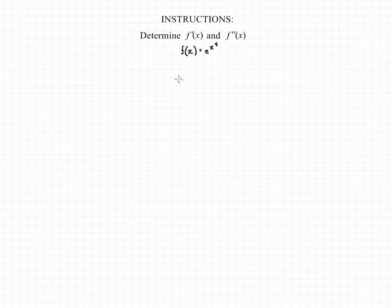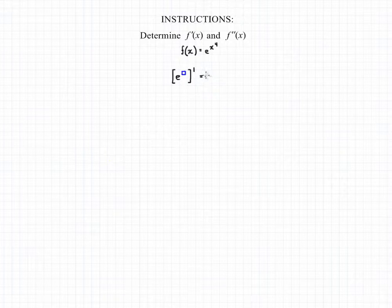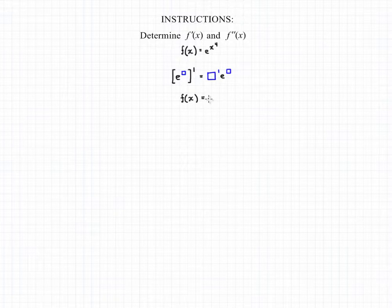We're going to begin this question by finding the first derivative of our function. To do that we need to remember the general form of a derivative involving e. The general form says if you have e raised to a power, you can find the derivative by taking the derivative of that power and multiplying it by the original function — e to that original power.